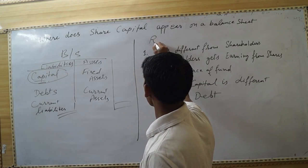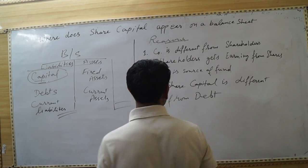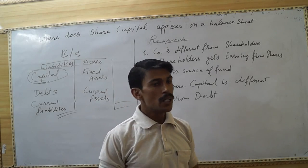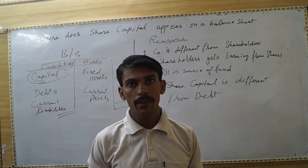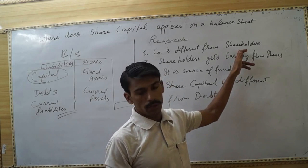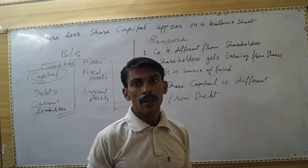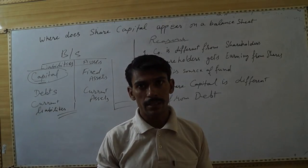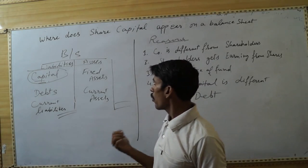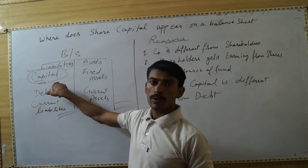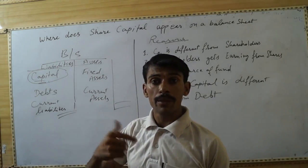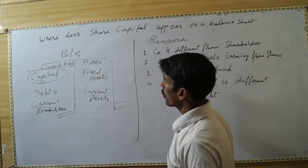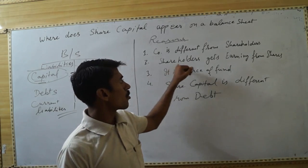The first reason is that the company is different from its shareholders. Shareholders are the businessmen, and they are different from the company. When the company issues shares, shareholders invest their money in it. This money is shown on the liability side because it will be refunded at the time of liquidation of the company.